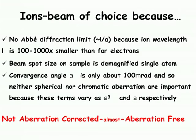To summarize: ion beams are the beam of choice because there's no Abbe diffraction limit — the ion wavelength is so small. The beam spot size on the sample is actually a demagnified image of a single atom, so it really is very small. The convergence angle of the beam is extremely small, so there are none of the normal aberrations that make scanning electron microscope performance problematic. This is not aberration correction — it's building a system which is essentially aberration-free.